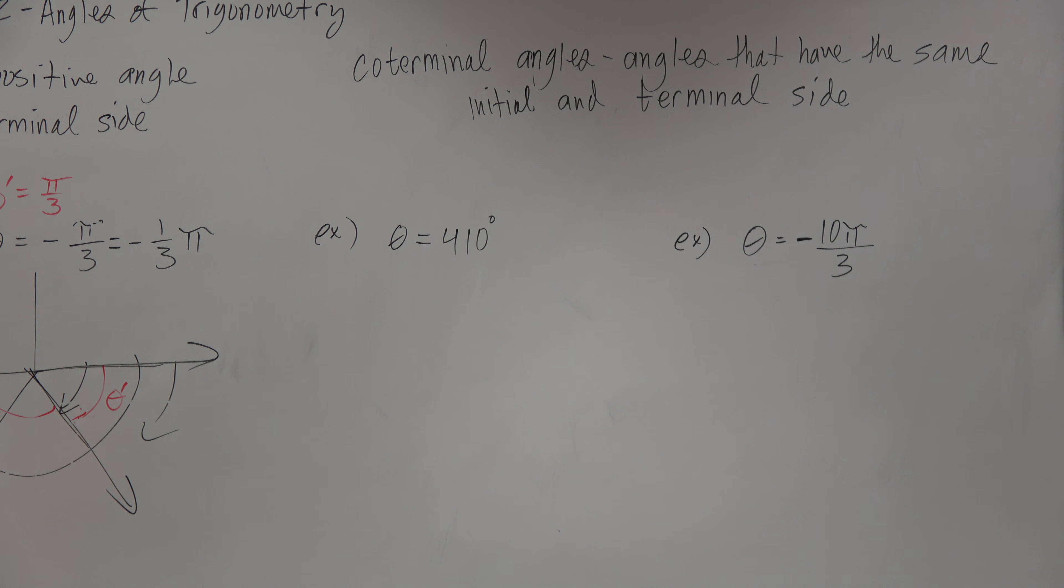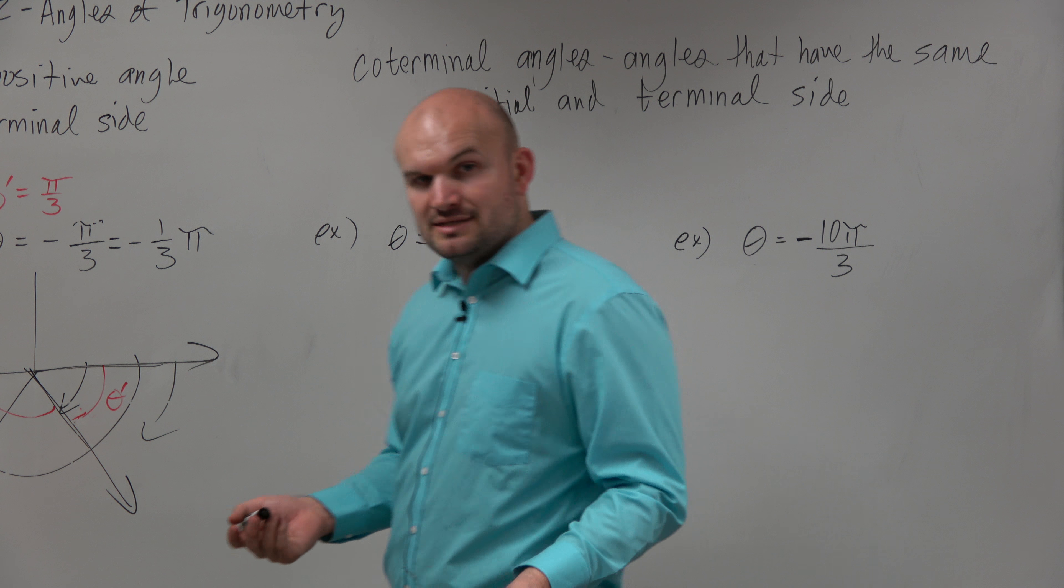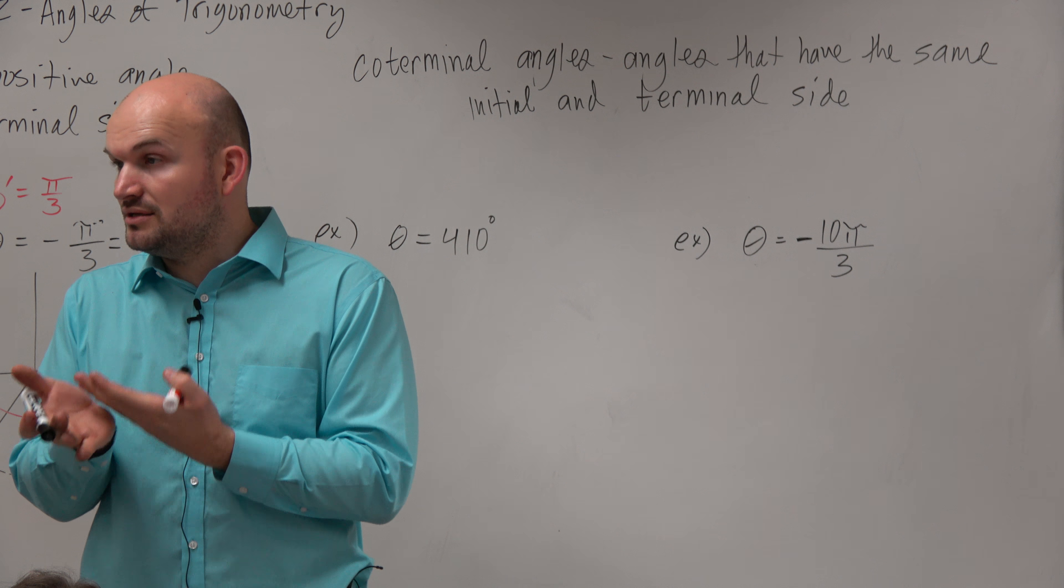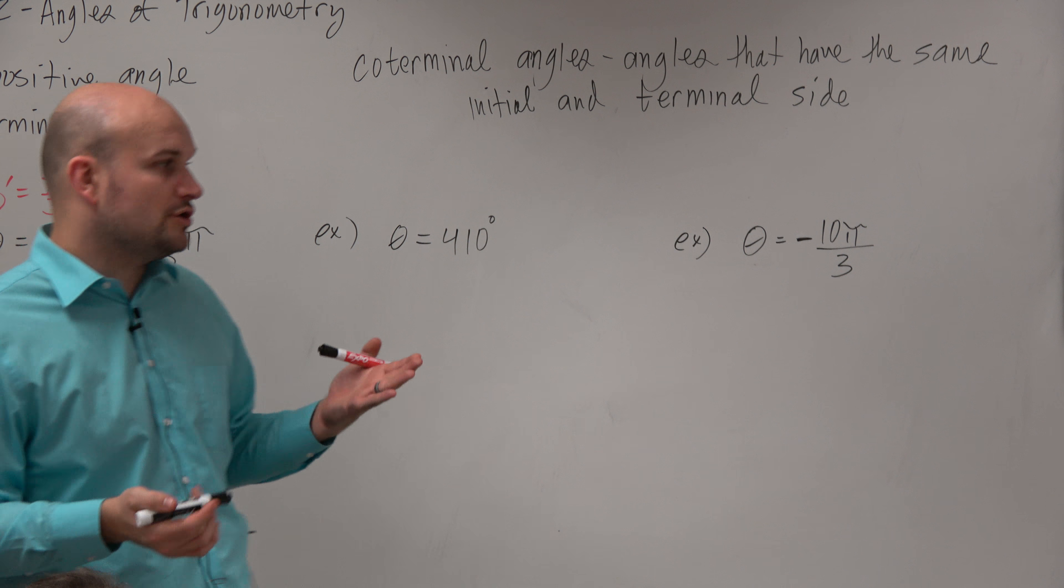So an example to kind of look at this one, guys, is we have 410 degrees. How do you find a coterminal angle? What I'm going to ask you guys to do is how do you find a positive acute angle using coterminal angles?